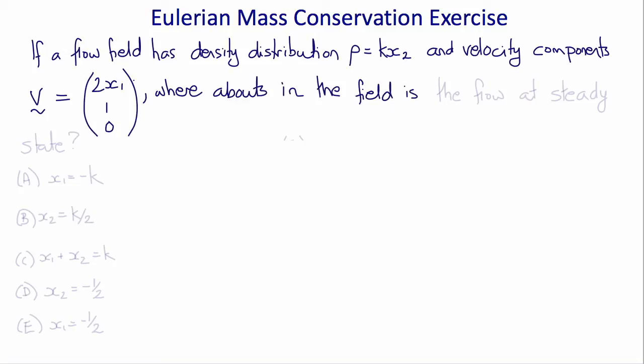Whereabouts in the flow field is the flow at steady state? Is it A: x1 equals minus k, B: x2 equals k upon 2, C: x1 plus x2 equals k, D: x2 equals minus 1 half, or E: x1 equals minus 1 half?